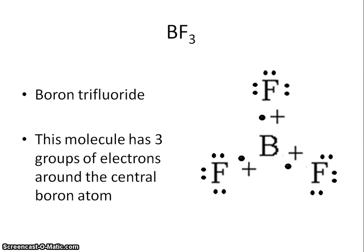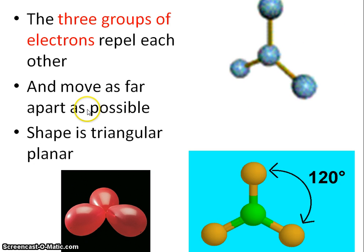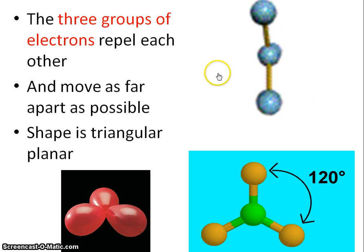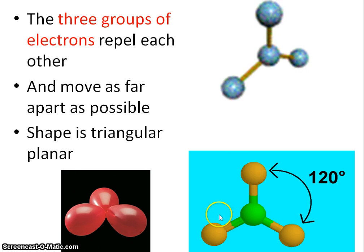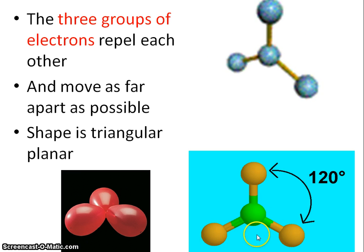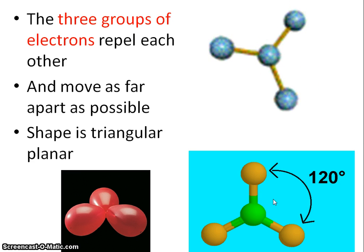Let's take a look at a molecule which has three groups of electrons: boron trifluoride. You can see boron with three groups of electrons around the central atom. These electron groups repel each other and move as far away from each other as possible, giving us a flat shape described as planar. It's triangular, so the shape is described as triangular planar, with a bond angle of 120 degrees.